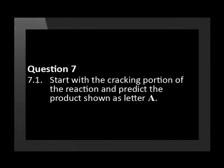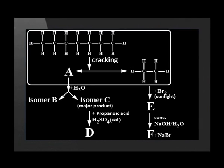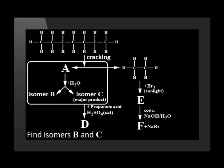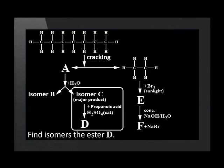Start with the cracking portion of the reaction and predict the product shown as letter A. Now that you've found out molecule A, add in the water to make the two isomers B and C. Remember that isomer C is the major product from Markovnikov's rule.